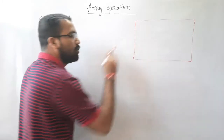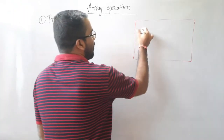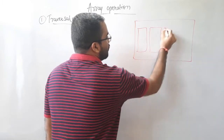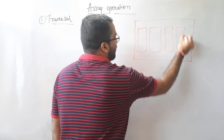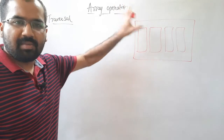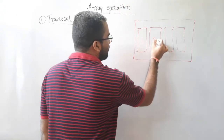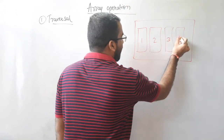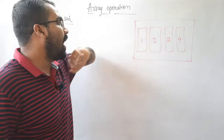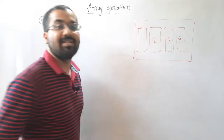Let me give you the idea of traversal operation with this example. Let's consider this is a very big, huge land, and on this land you can see some houses are constructed — two, three, and four. Initially only four houses are constructed on this particular land, and they are numbered one, two, three, and four.